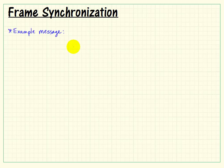Let's explore the issue of frame synchronization by considering a specific example message. That looks like a really long stream of ones and zeros,